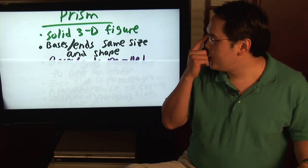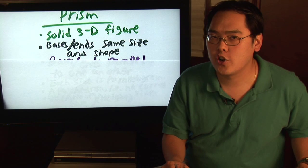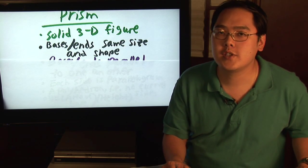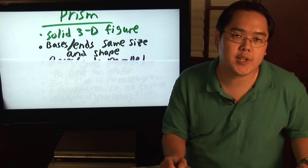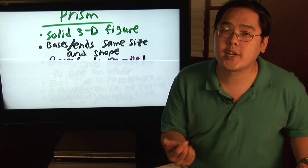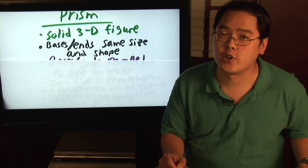In a prism, the two bases or two ends of this figure are going to have the same size and same shape. In other words, the two bases or the two ends of a prism can both be rectangles, triangles, squares, but there is an exception which we'll get to later on.